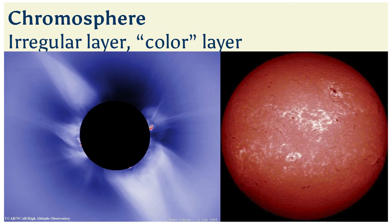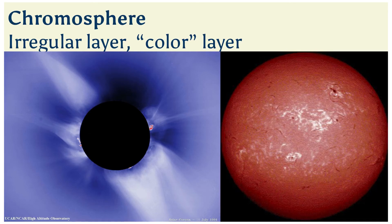The chromosphere is an irregular color layer of the sun where the temperature rises from 6,000 to about 20,000 degrees Celsius. At these higher temperatures, hydrogen gives off a reddish light called H-alpha emission. This colorful emission can be seen in prominences projecting above the limb of the sun during a total solar eclipse — this is what gives the chromosphere its name, the 'color sphere.' When viewed through special H-alpha filters, features like a chromospheric network, dark filaments, and prominences become visible.